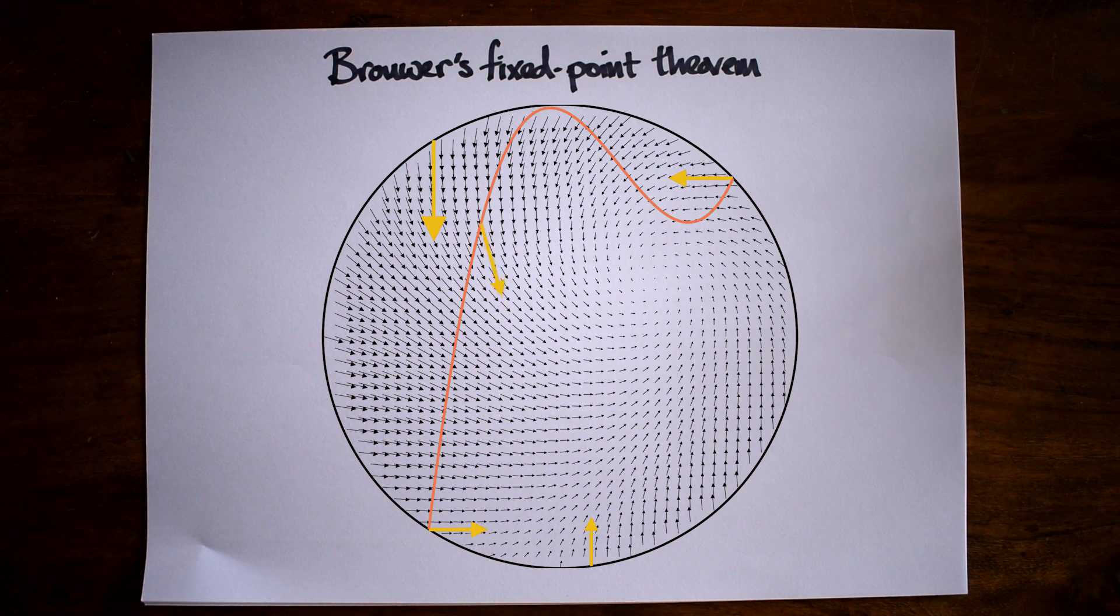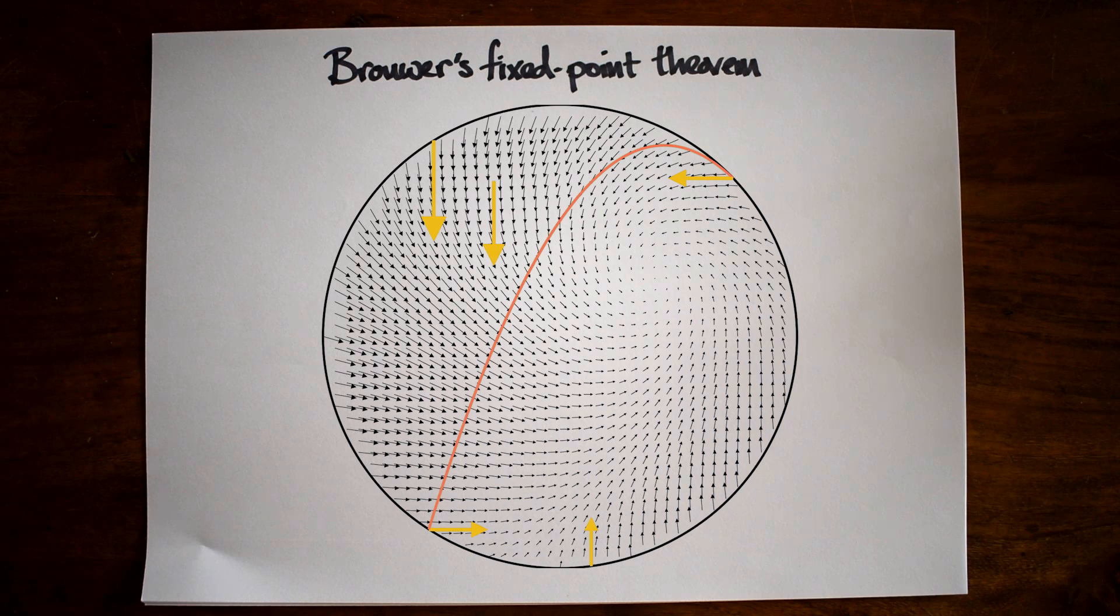But it could still be pointing up or down, and that means it's not a fixed point. But the path we chose was completely arbitrary, and we can find another, where again at some point the vector points neither left nor right.